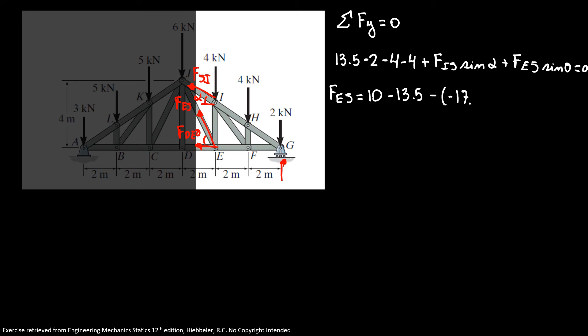So I have our F_EJ equals 10 minus 13.5 minus minus 17.13 sine of alpha divided by sine of theta. So our F_EJ equals 6.71 kilonewtons. Since it's positive we have tension.